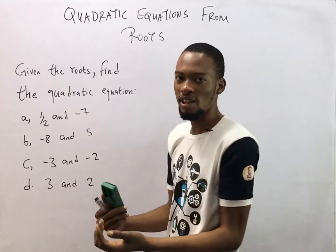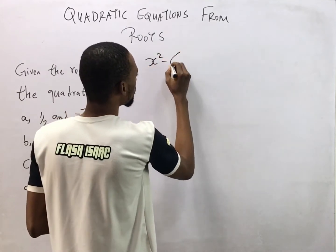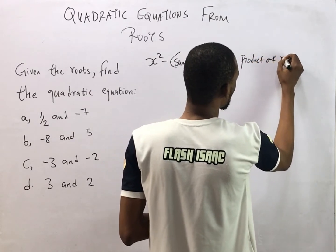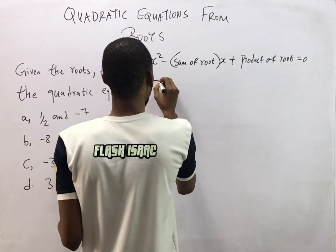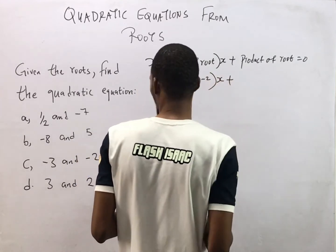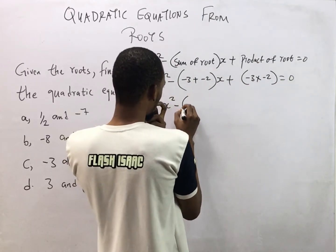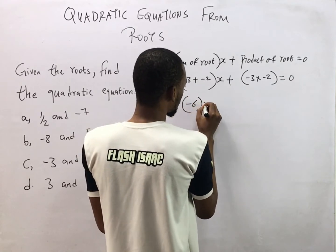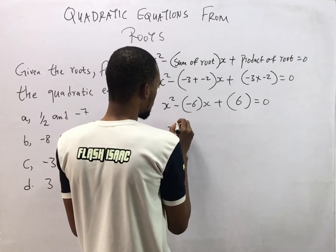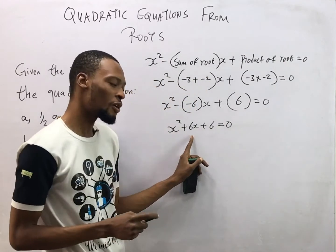Question C asks us to find the quadratic equation whose roots are -3 and -2. The quadratic equation is s² minus (sum of roots)s plus (product of roots) equals zero. So: s² - (-3 + (-2))s + (-3 × -2) = 0, giving s² - (-6)s + 6 = 0, which becomes s² + 6s + 6 = 0.